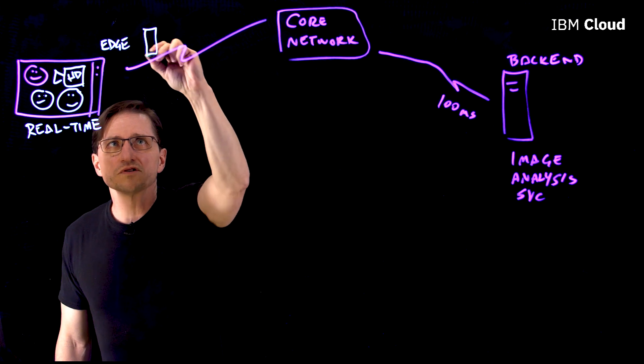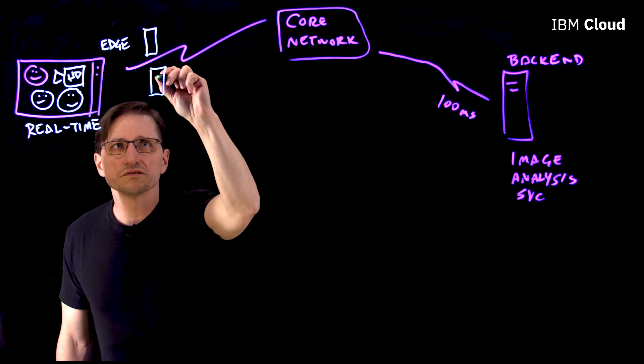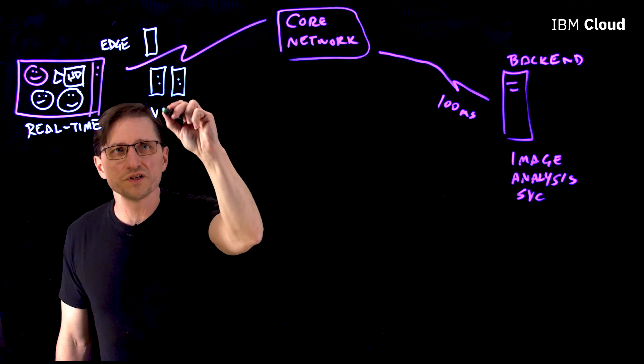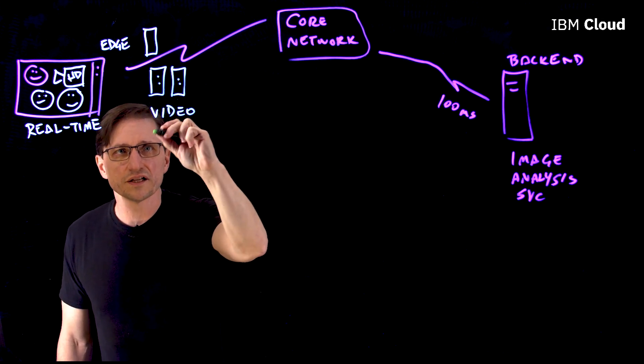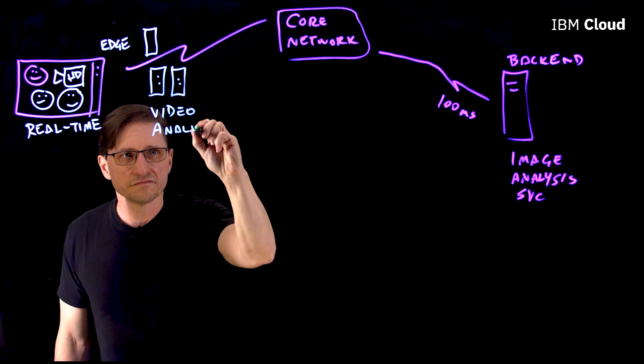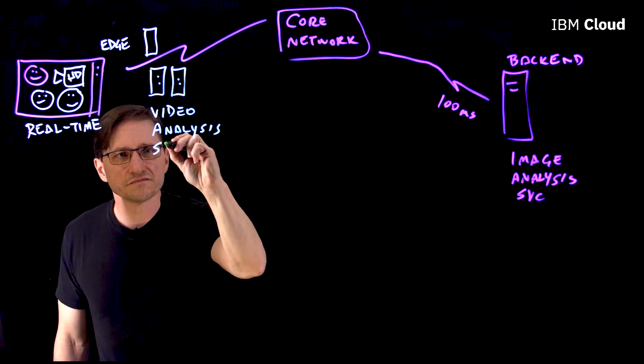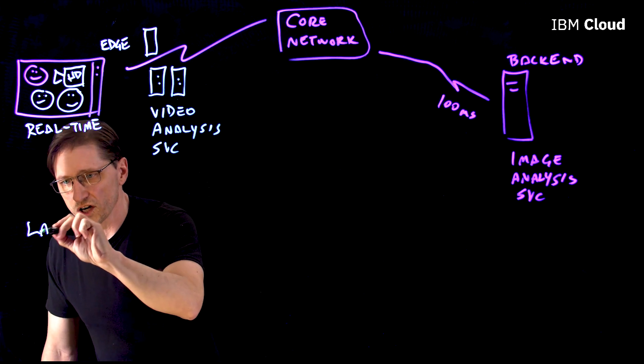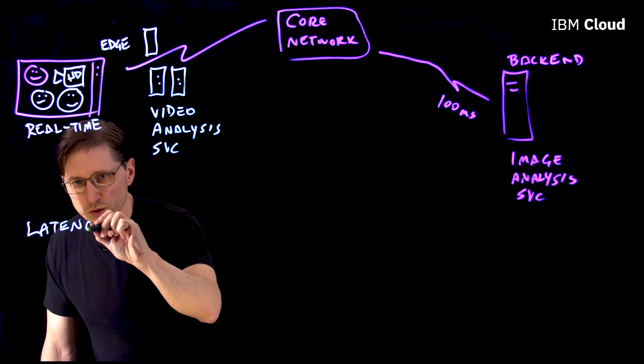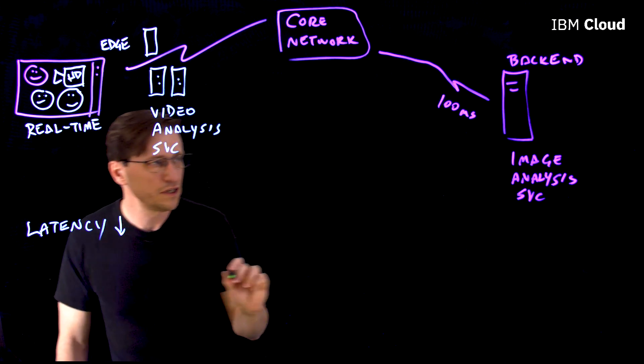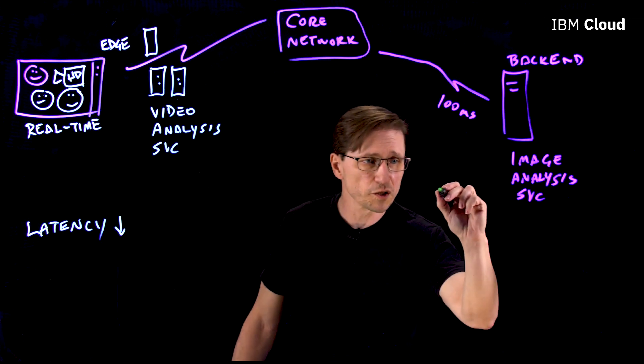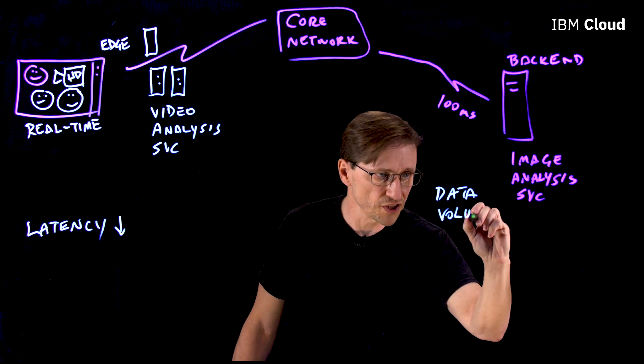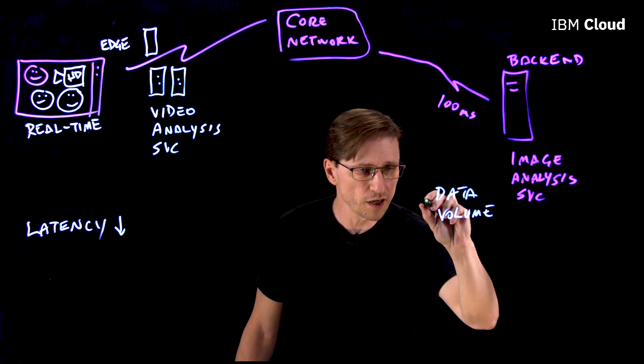So for example, we install some edge servers. And on those, we install the video analysis service. This really helps with our latency problem. We no longer have to send data across the network to a faraway server. It also helps with our data volume problem. We're no longer sending huge amounts of data across the network.